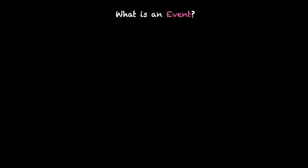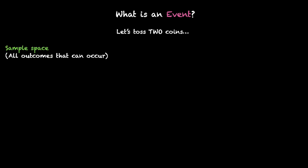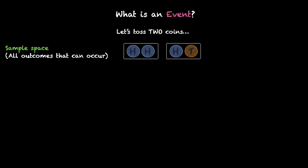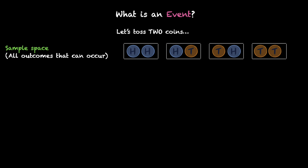To understand this, let's toss two coins. What do you get when you toss two coins? Let's list down all possible outcomes that can occur. And by the way, we know that this is also called sample space. So the sample space will have these possible outcomes: either we can have both of them as heads, or the first one as heads and the second one as tails, or the first one as tails and the second one as heads, and finally both of them as tails. These are the four possible outcomes.